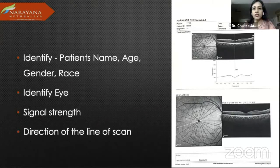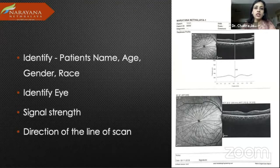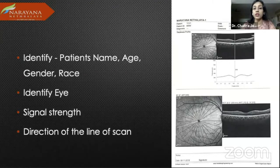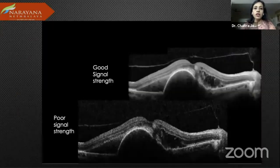Every time you look at a scan, important things to identify include the patient's name, age, gender, and race — these could have a bearing on your treatment. Identify the eye, because you need to make sure which eye you're treating. The signal strength and the direction of the line scan are also important.